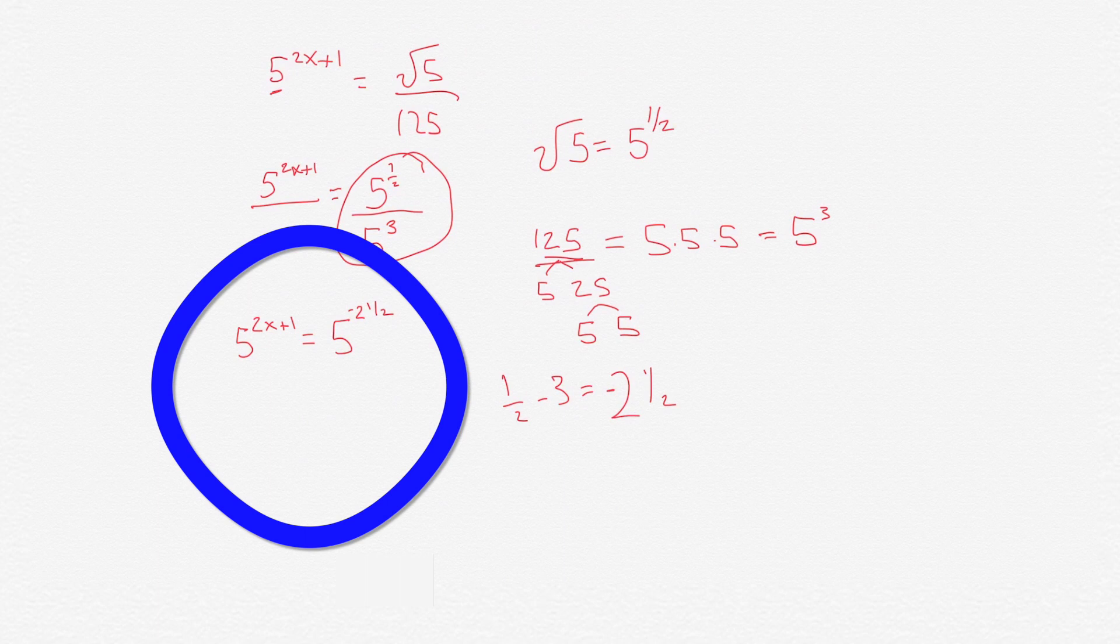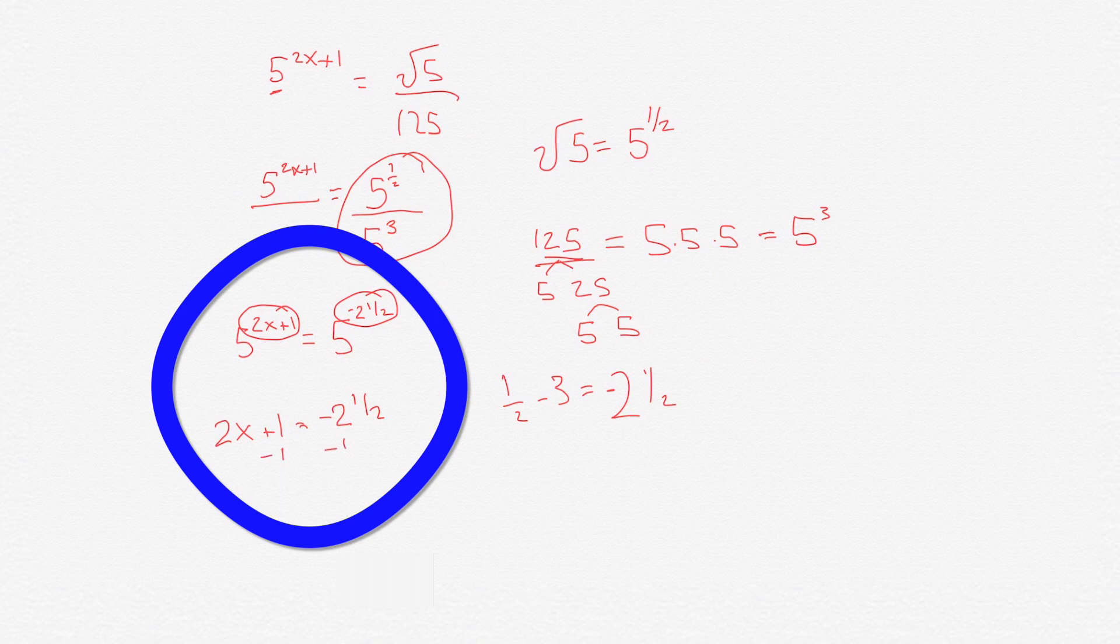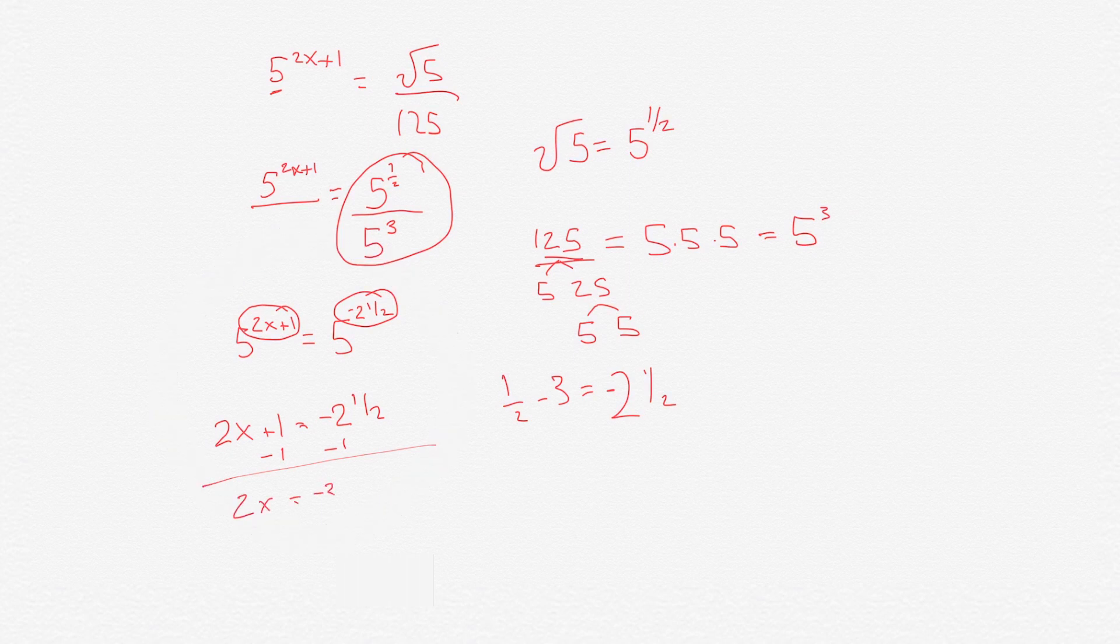We have 5 to the 2x plus 1 equals 5 to the negative 2 and a half. Because the bases are the same, they're both 5, we could just set the exponents equal to each other, so 2x plus 1 equals negative 2 and a half. We subtract 1 from each side, then we get 2x equals negative 3 and a half.